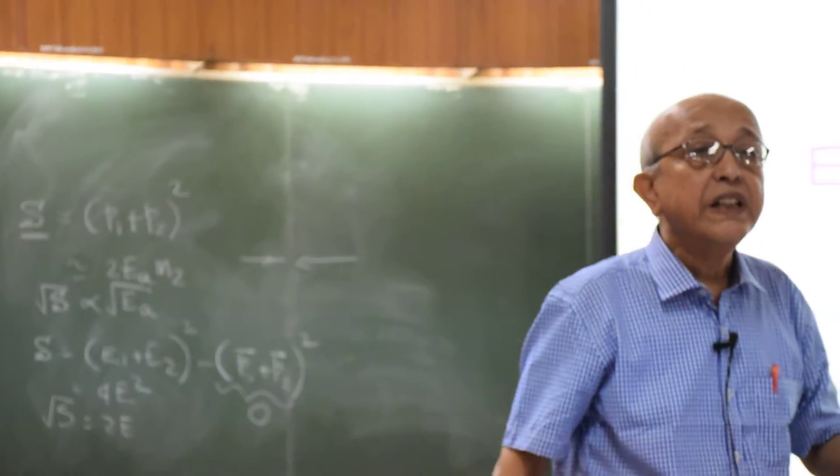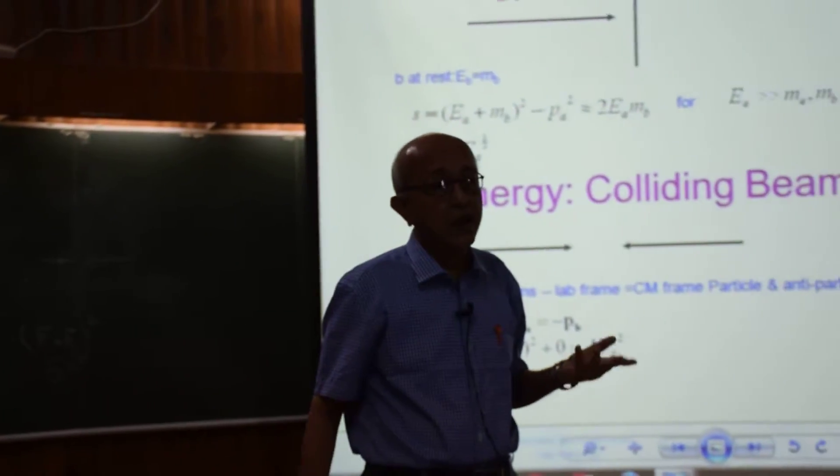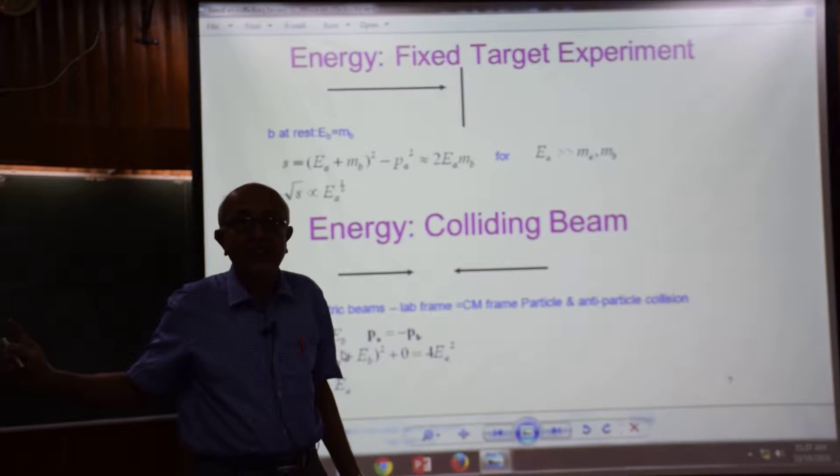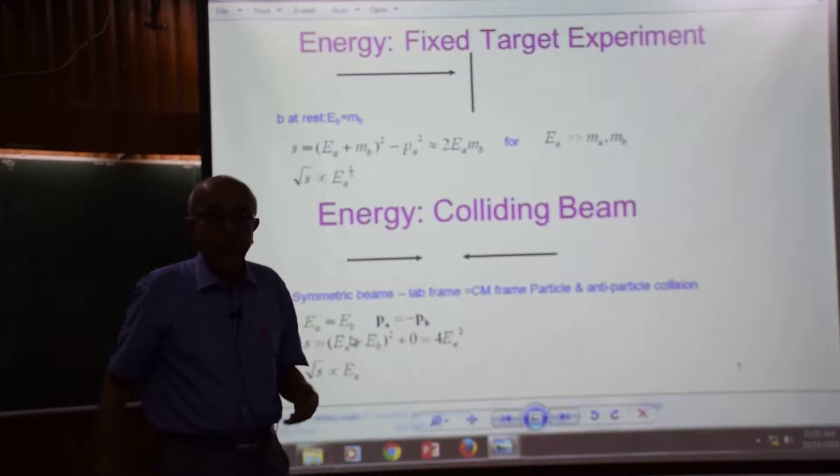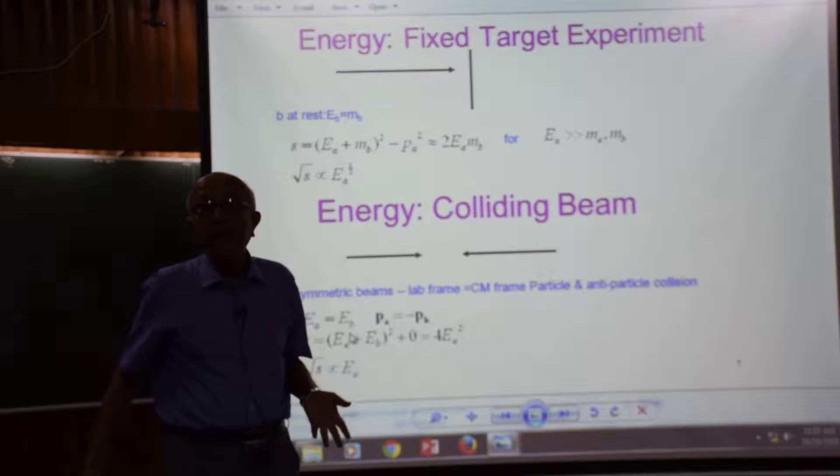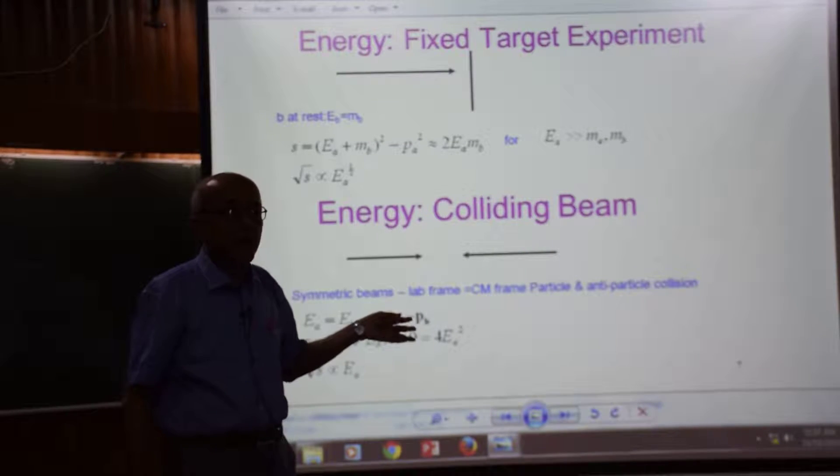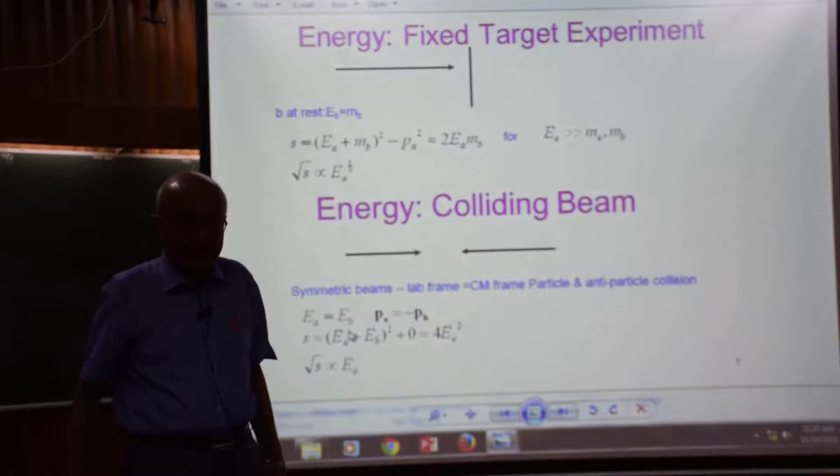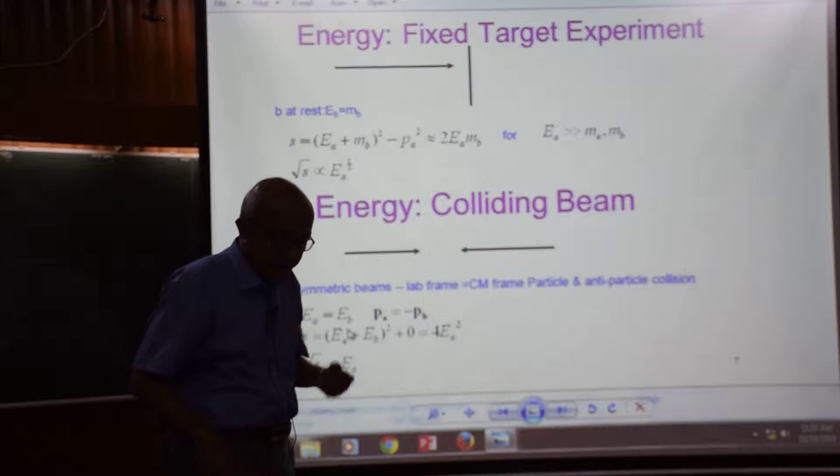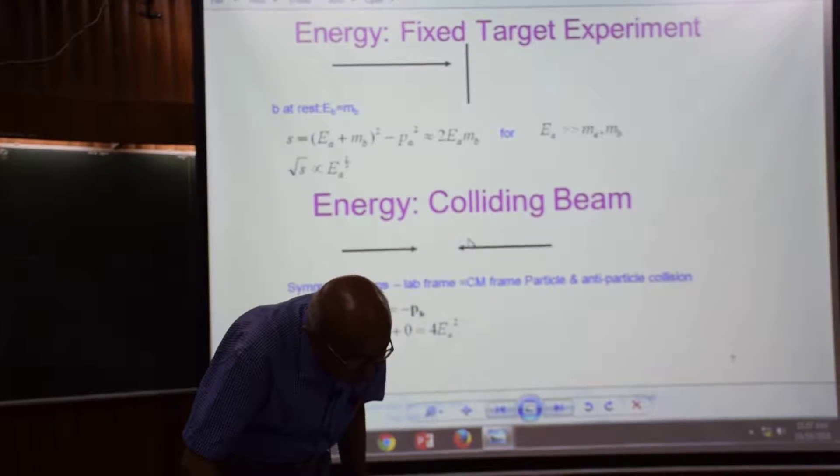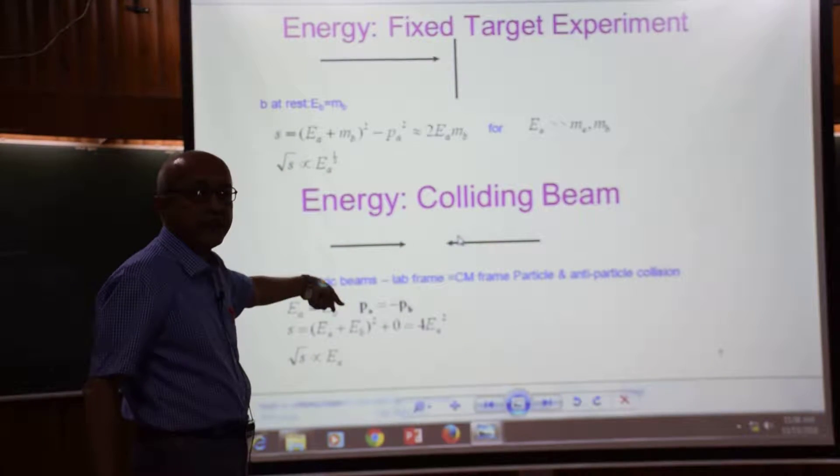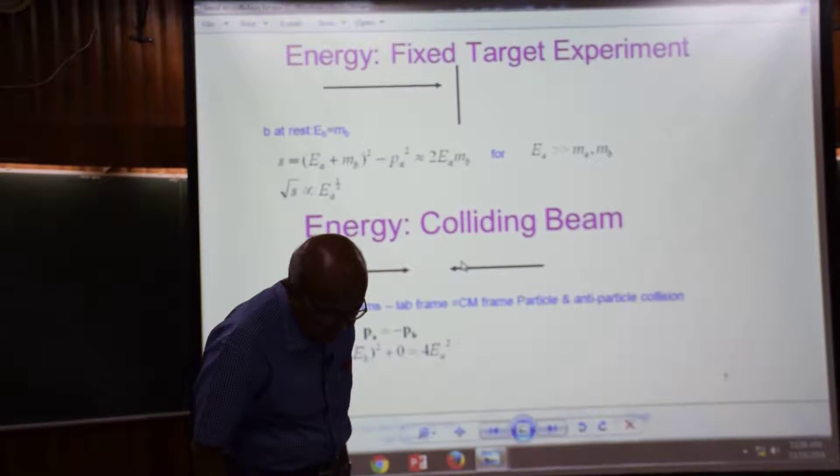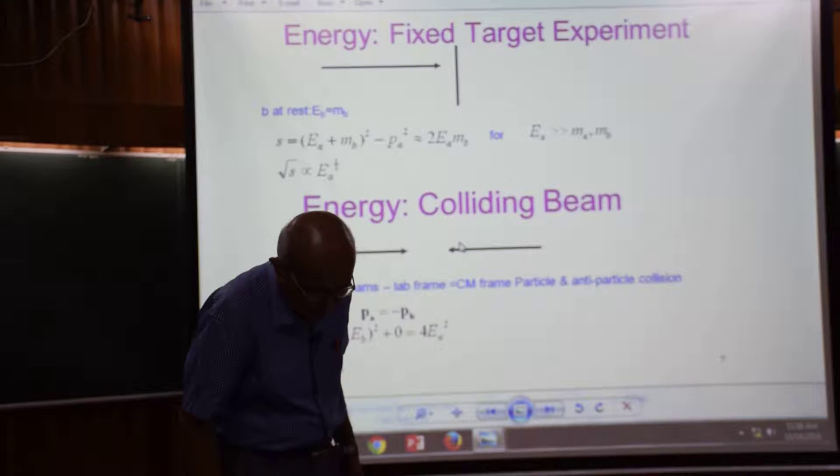So you have a 100 GeV beam, you can produce a 100 GeV particle, as simple as that. So therefore this is cost effective, it is worth your money, and hence we have preferred to... there are problems with the colliding beam also, but let us not go into that details. At least from the first principle, it seems that it is cost effective. So this is how we produce particles using colliding beams, and we prefer the colliding beam experiment.